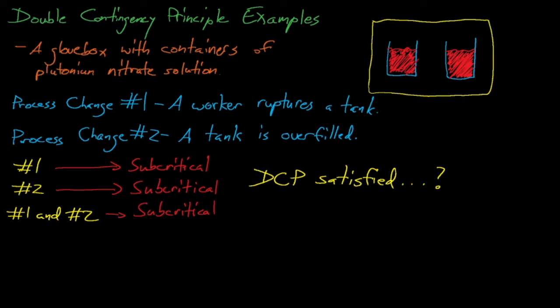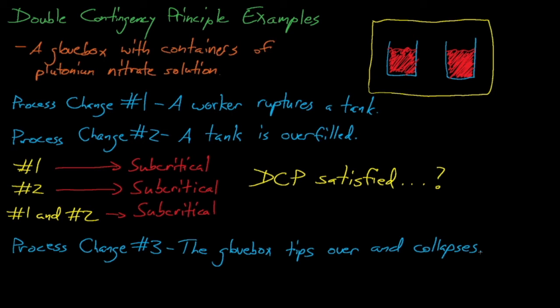If we introduce a third credible abnormal event, which is the glove box tipping over and collapsing, and we assume that our system is subcritical after all of these events, then now do we satisfy the double contingency principle? As long as these events are independent, unlikely, and concurrent events, then we do. If these events happen to not be independent, then one possible option is to add controls to the system so that they now are independent. For example, we could strengthen the glove box's structural supports so that a ruptured tank is not likely to tip over the glove box. Also, we could strengthen the plutonium nitrate containers so that overfilling does not make them more likely to rupture.